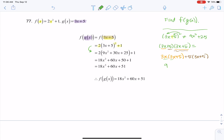So 3x times 3x is 9x squared, 3x times 5 is 15x, 5 times 3x is 15x, and 5 times 5 is 25.